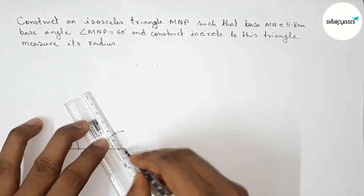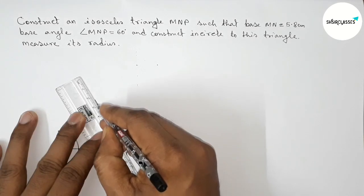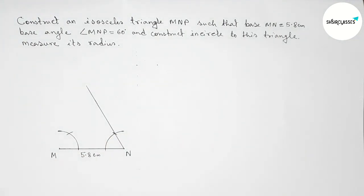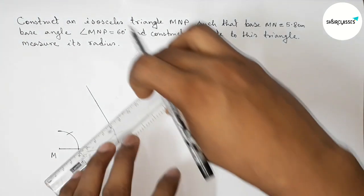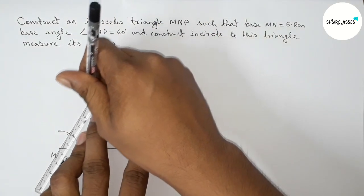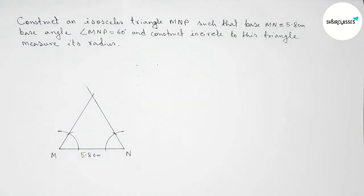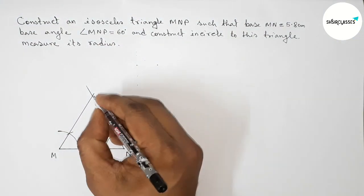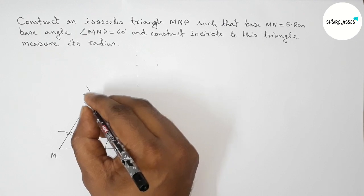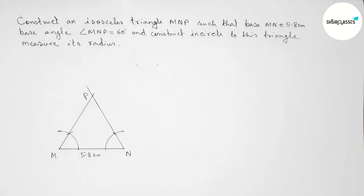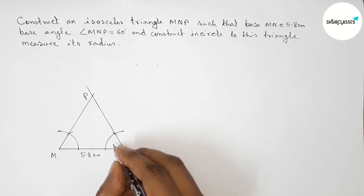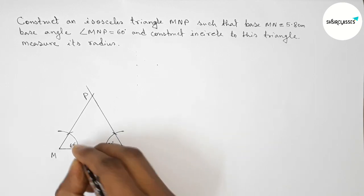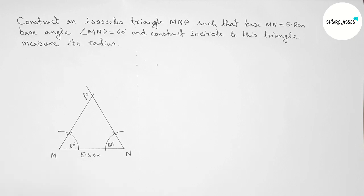Now joining the line to get a 60 degree angle at N, and joining the line to get a 60 degree angle at M. Both lines meet at a point — this is point P. So this angle is 60 degrees and this angle is also 60 degrees, confirming it is an isosceles triangle MNP.